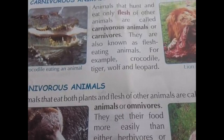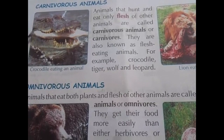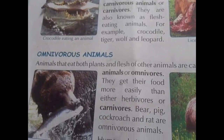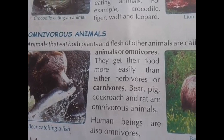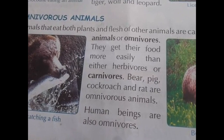Examples of herbivorous animals are cow, goat, etc. Carnivorous animals are the animals that hunt and eat the flesh of other animals. Examples are crocodile, wolf, etc. Omnivorous animals are the animals which can eat both plants and animals. Human beings are also omnivorous animals.